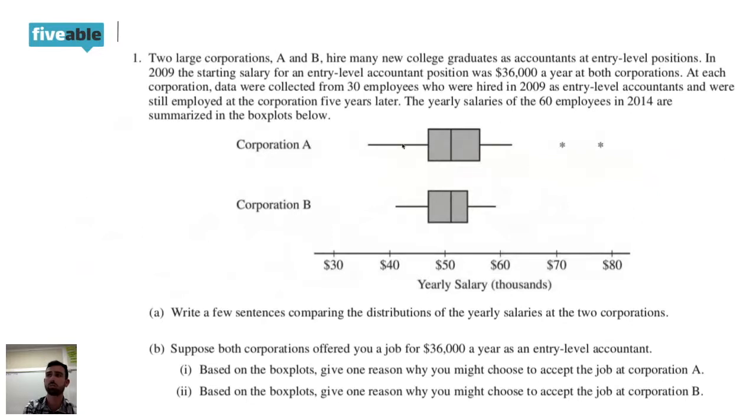So you can see job A. There's a chance that if you took job A, right, because they're starting out at $36,000 and then this is their salary a year later. So it looks like at job A, there are some people who didn't really make that much more five years later. But on the other end, you have people that really made a lot and you have an opportunity to make a lot of money.